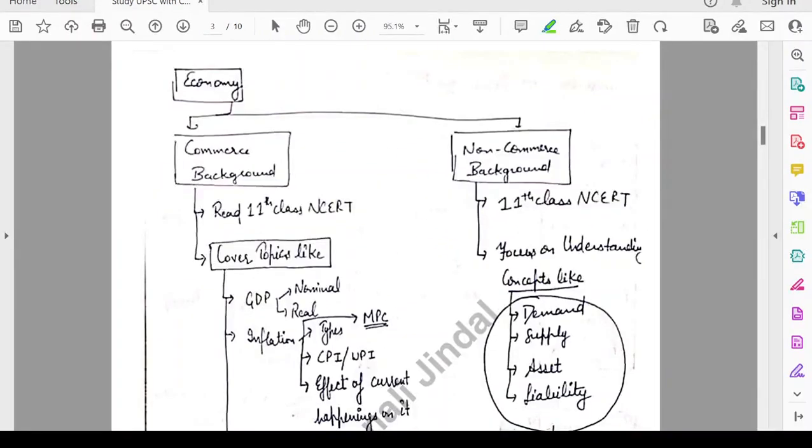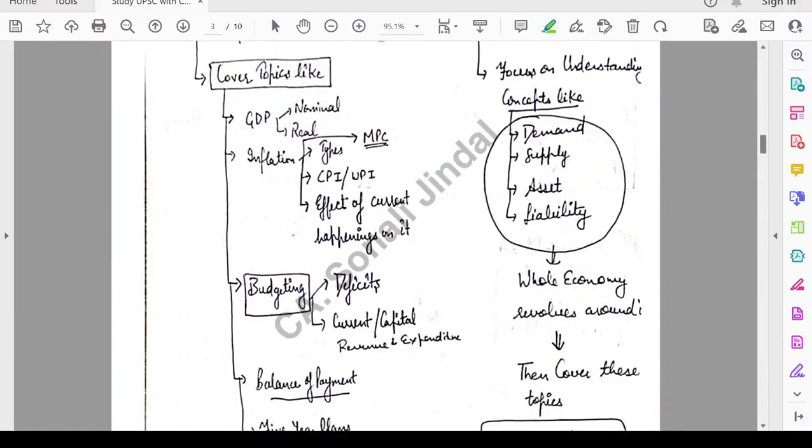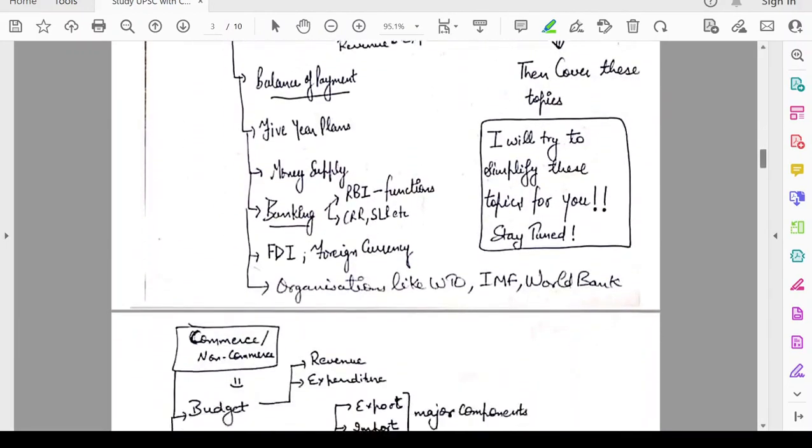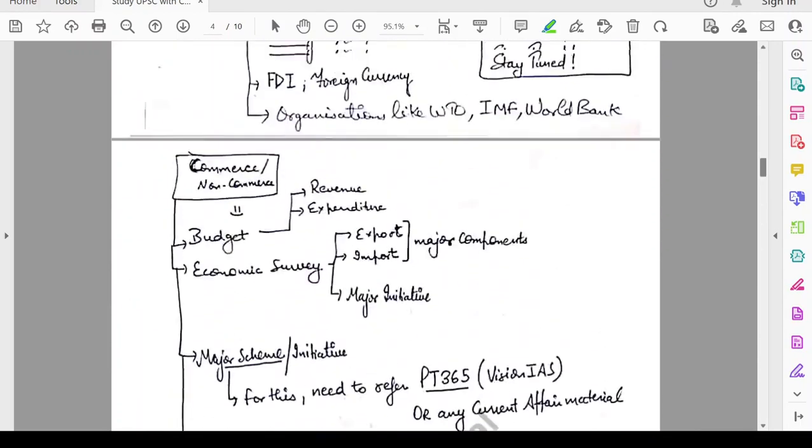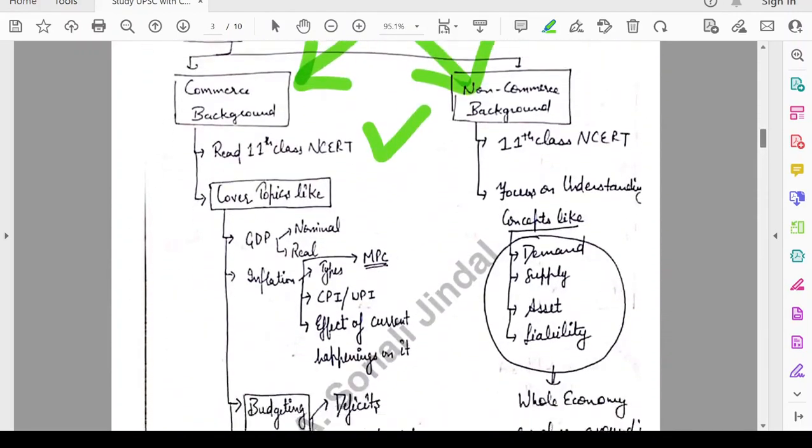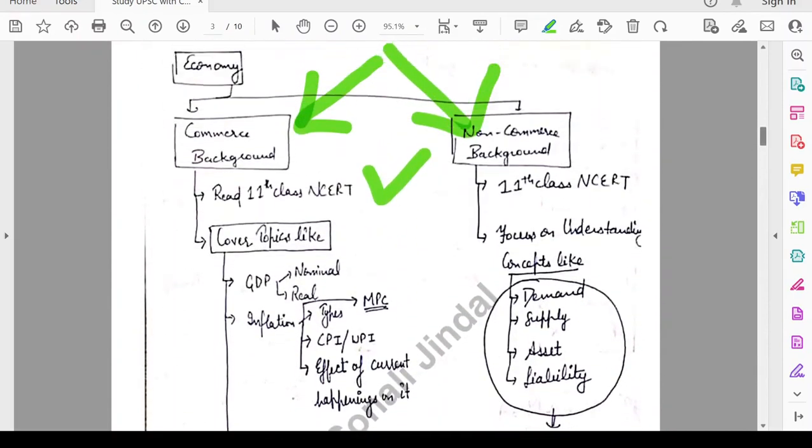Now, let's start with economy. Here I have made bifurcations between commerce background and non-commerce background. If you are from commerce background, then you need to read 11th class NCERT. Then you need to cover these topics that has been mentioned in this PDF. You can get this PDF in description of this video.